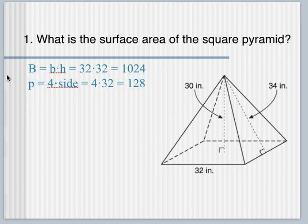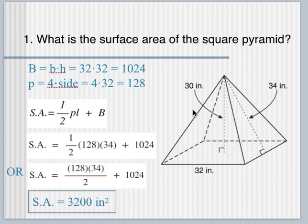Then you could plug it all in. So look at your picture and in your head decide what you would plug in for L, the slant height. Would you plug in 30 or 34? You should have chosen the 34. 30 is the H, the normal actual height of the pyramid. You want 34, the slant height of one of the side triangles.